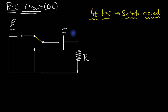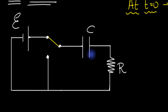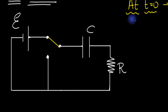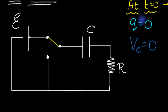Before closing the switch, the charge on the capacitor was zero. We have just closed the switch and no time has passed, so it's impossible for the capacitor to have gained any charge — because for it to gain charge, some finite time must pass for the charge to flow. Therefore the charge is zero. If the charge is zero, the voltage across the capacitor must also be zero, since voltage equals charge divided by capacitance.